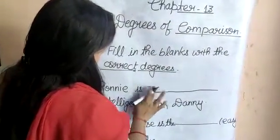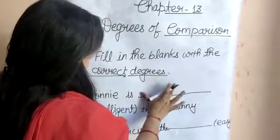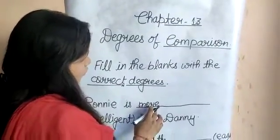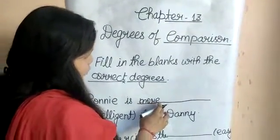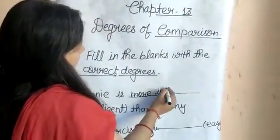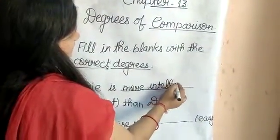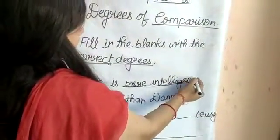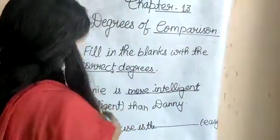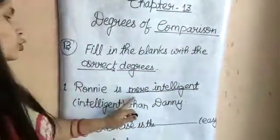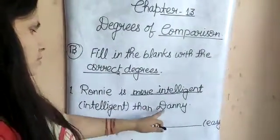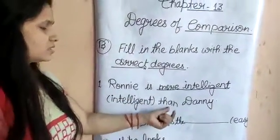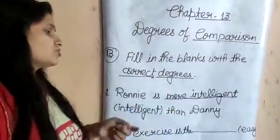यहाँ आप fill करेंगे 'more intelligent' — M-O-R-E I-N-T-E-L-L-I-G-E-N-T। Roni is more intelligent than Danny। यानी Roni, Danny से ज्यादा intelligent है।